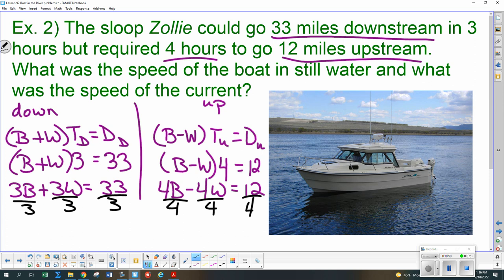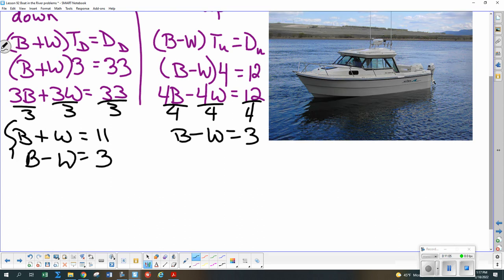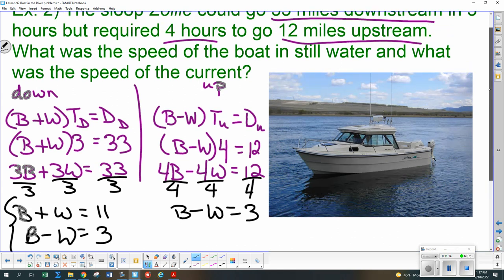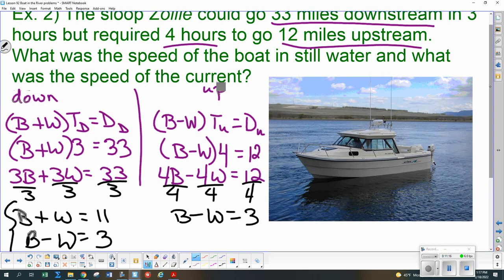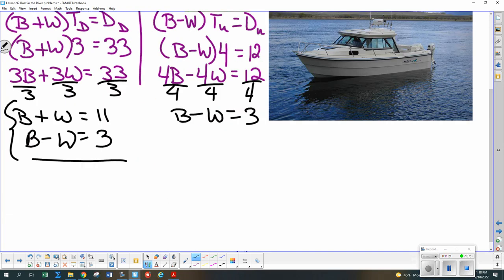So let's see. What do we have? B plus W equals 11. And B minus W equals 3. How about you guys finish solving the system? B equals what? W equals what? And then we'll check and see. If I've got that up enough where you can see units as you finish.